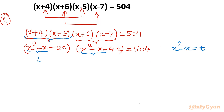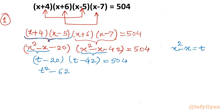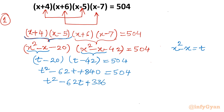With the substitution t = x²-x, the equation converts into (t-20)(t-42) = 504. Once we expand this, we get t²-62t+840 = 504. Taking all terms to the left gives t²-62t+336 = 0.